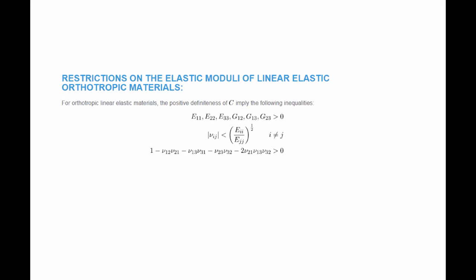If you repeat what we just did but for orthotropic materials, you will get other restrictions. These other restrictions are: the moduli shown here have to be greater than zero, this equation has to be greater than zero, and this gives the relationship between Poisson's ratios and the various values of the Young's moduli.